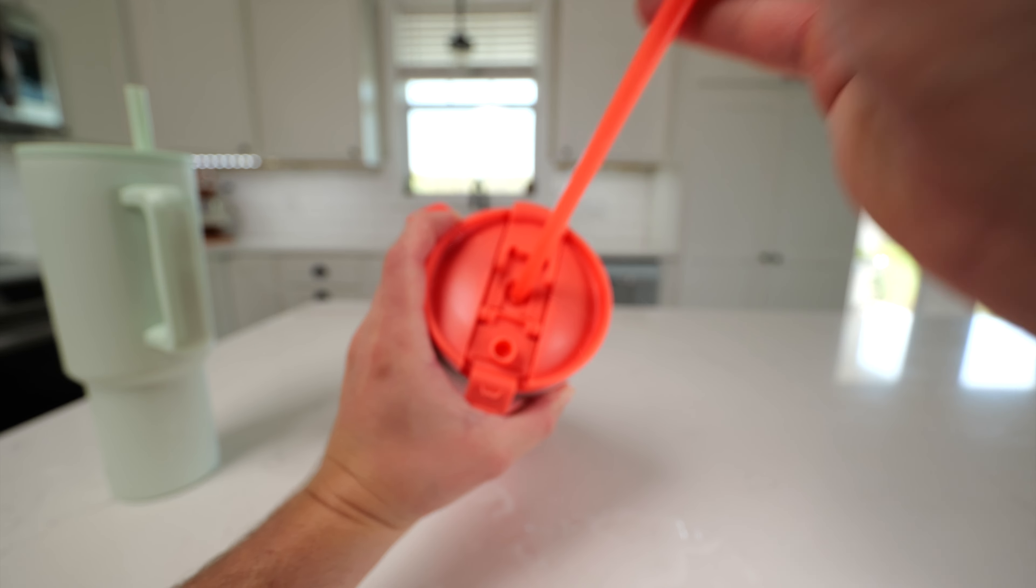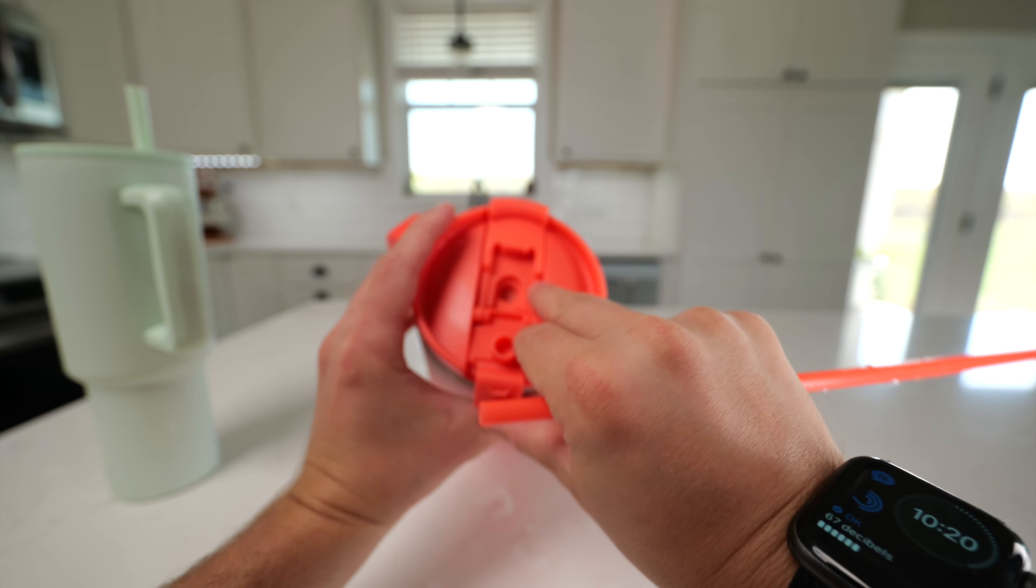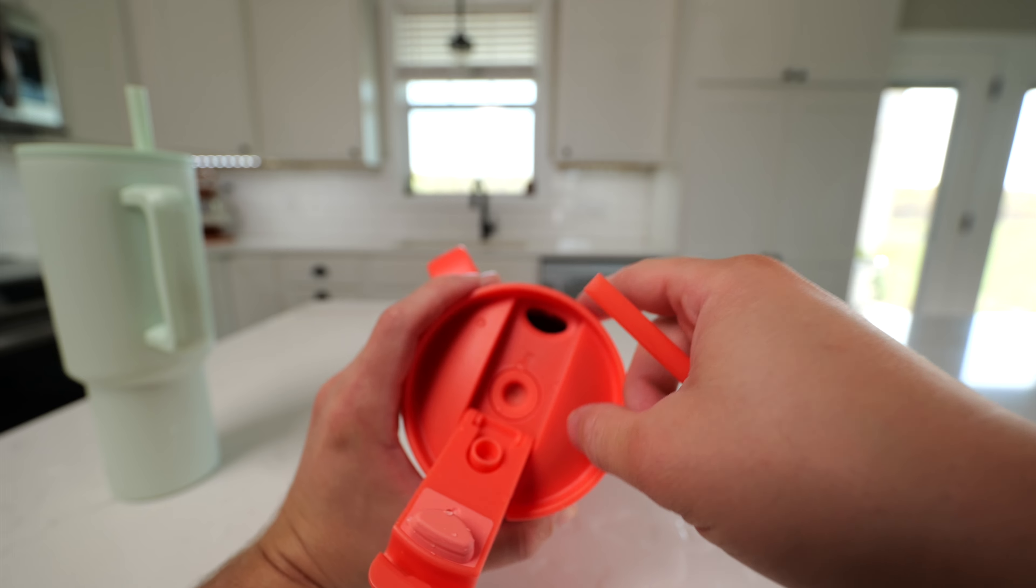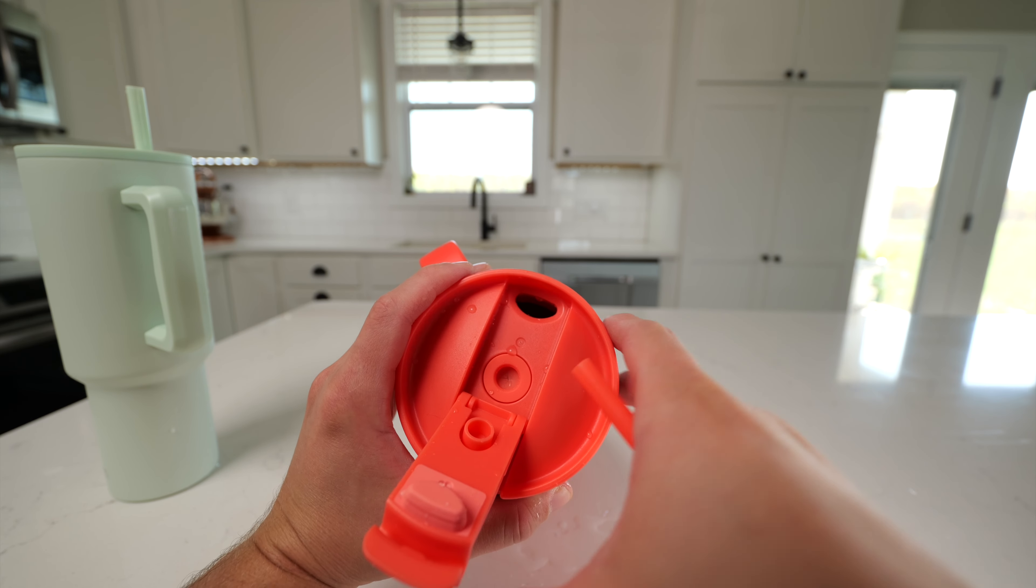What's really nice about the Contigo one is you can actually fully remove the straw, and you can seal the lid up if you want, or if you want to just sip from it, you can also open the lid this way. So you get a lot of flexibility with the Contigo lid.